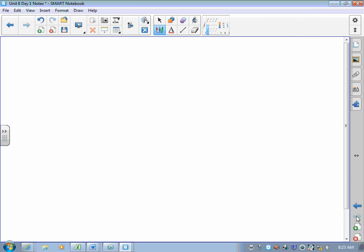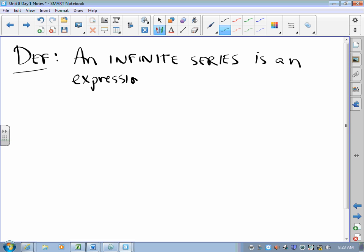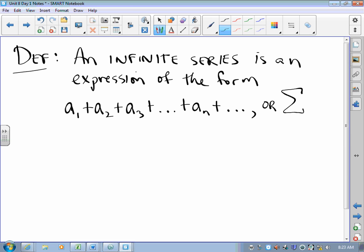So, let's go to work. By definition, an infinite series is an expression of the form a1 plus a2 plus a3 plus dot dot dot. There is some nth term plus dot dot dot. It goes on and on forever. Or, it's the sum, this is sigma notation, of a bunch of a sub k's as k goes from 1 to infinity.